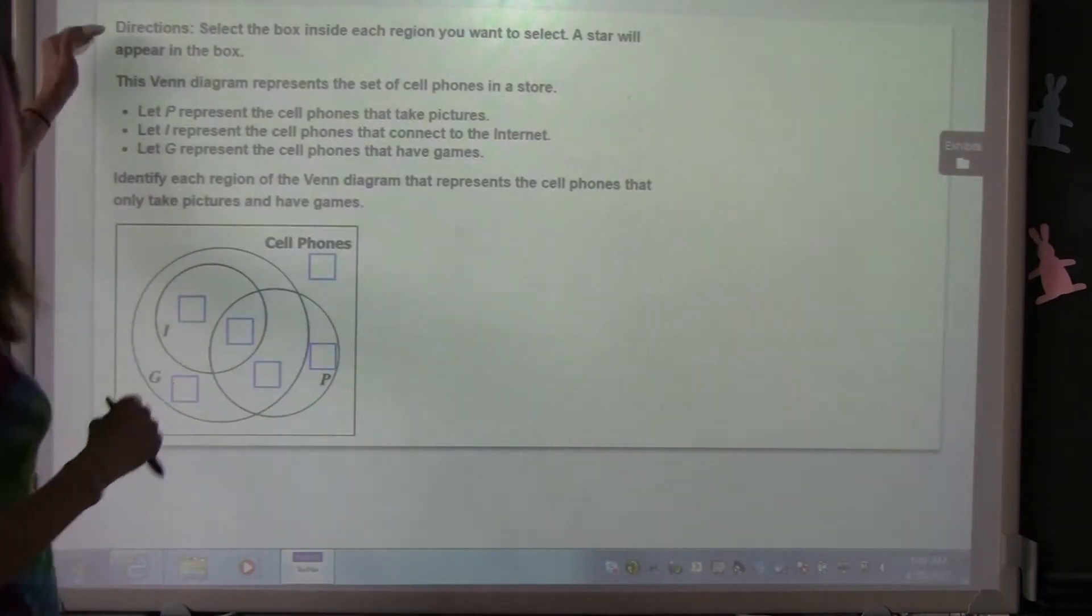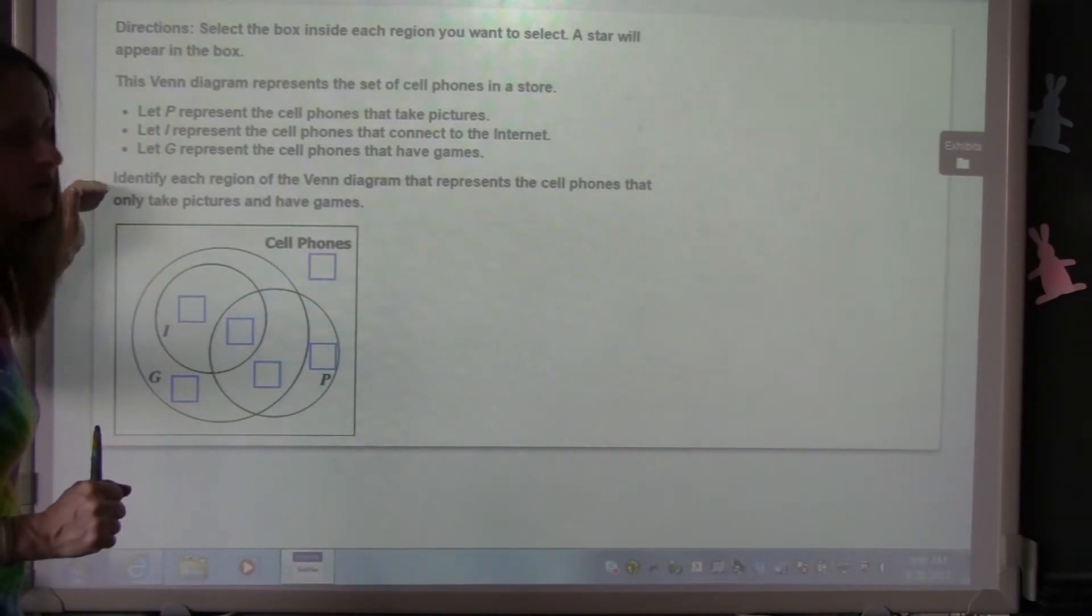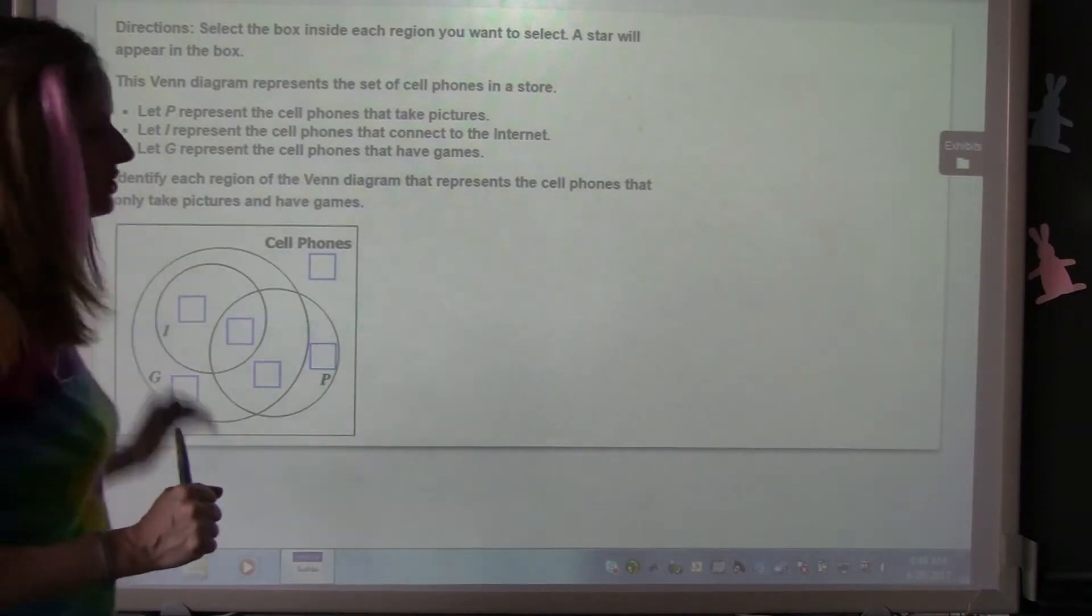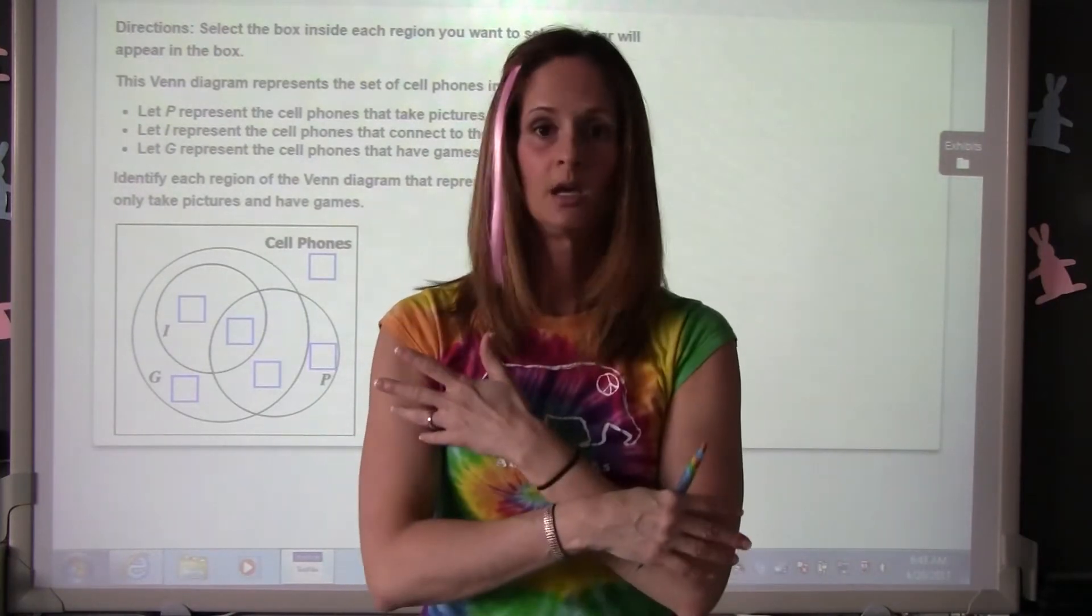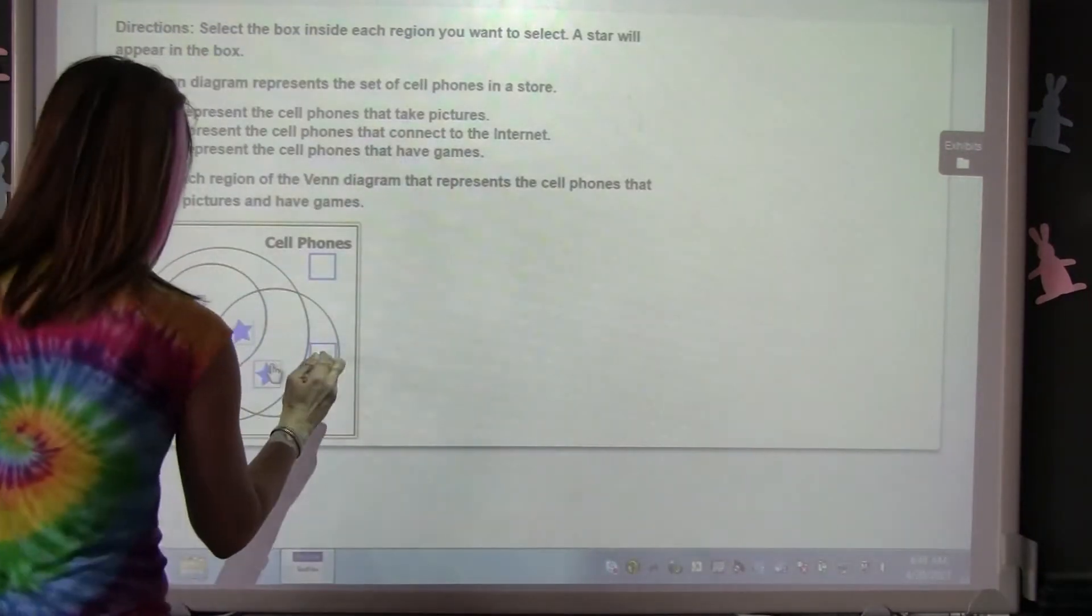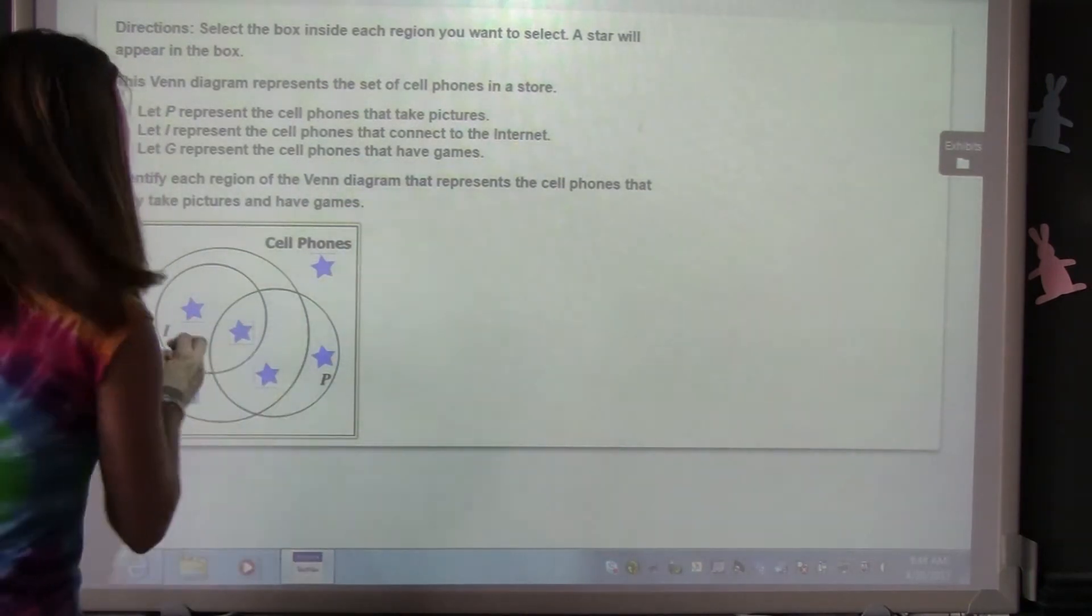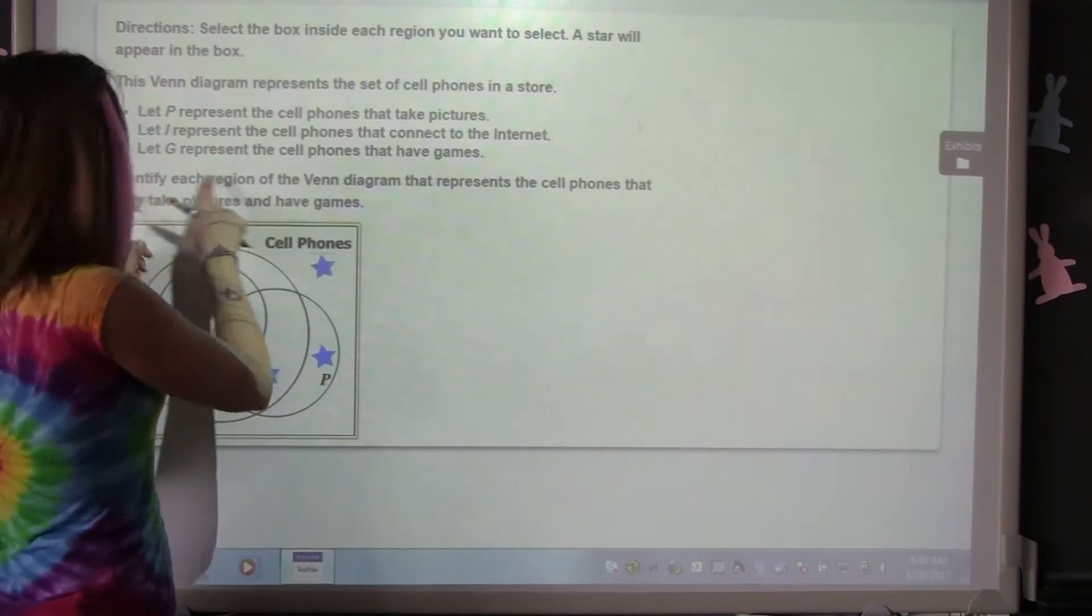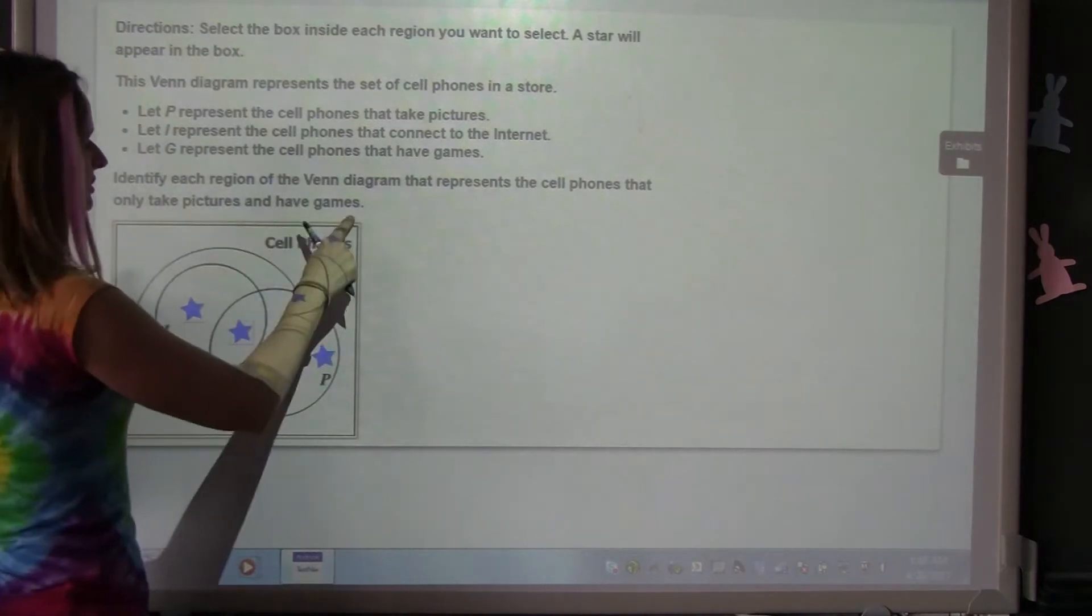Directions: select the box inside each region you want to select. A star will appear in the box. You read the question, then it says identify each region of the Venn diagram that represents the cell phones that only take pictures and have games. Has it told you how many sections to select? No, you don't know. It hasn't told you, so you could select all of them if you wanted. You have to read this a few times. Identify each region of the Venn diagram that represents the cell phones that only take pictures and have games.